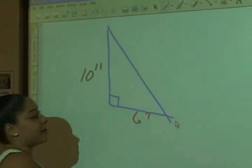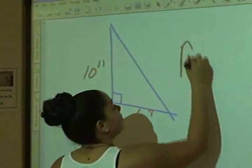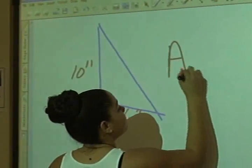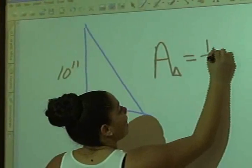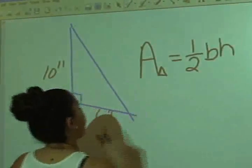Now whenever you're using a right triangle, you're going to use the formula area equals one-half base times height.